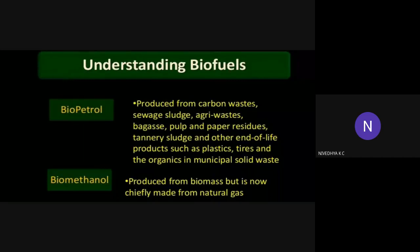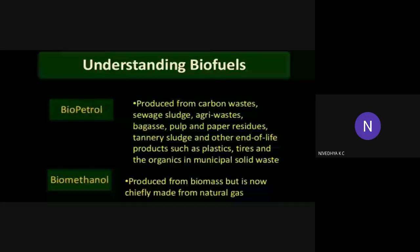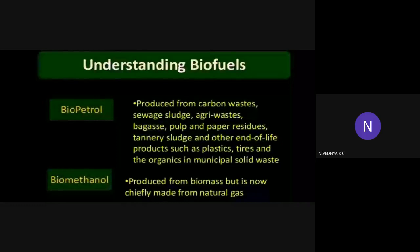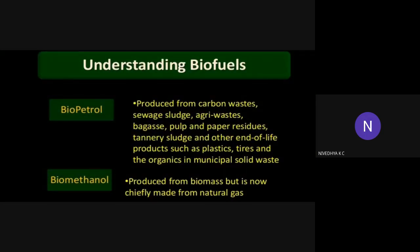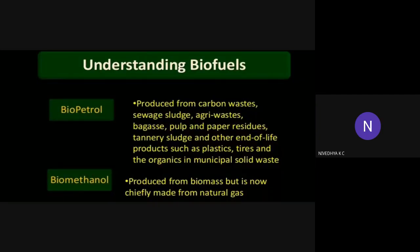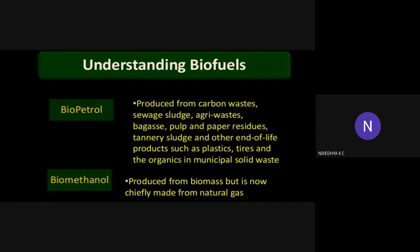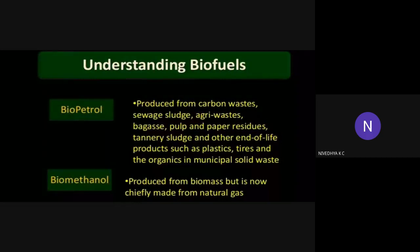Biopetrol is produced from carbon waste, sweet sludge, agricultural waste, bagasse, pulp and paper residues, tannery sludge and other end-of-life products such as plastic, tires and organic municipal solid waste. Biopetrol is produced mainly from carbon waste, pulp and paper residues, plastic waste, tires and organic municipal solid waste.